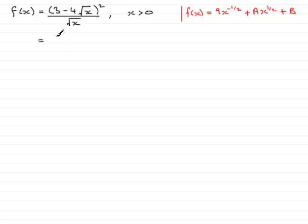So we've got 3 minus 4 times the square root of x, which is going to be x to the power half, multiplied by 3 minus 4x to the power half. And that's all divided by the square root of x here, which can be represented as x to the power half.